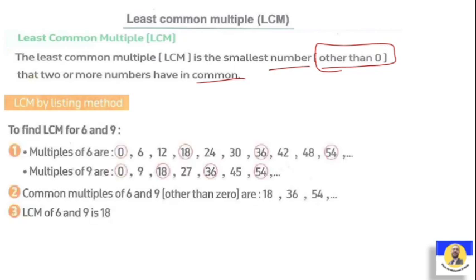Using the listing method: find multiples of 6 — zero, six, twelve, eighteen, and so on. Also find multiples of nine — zero, nine, eighteen, twenty-seven, thirty-six, and so on. The common multiples are 18, 36, 54, and so on. The least common multiple is 18, because it is the smallest number other than zero. Zero can never be the LCM.